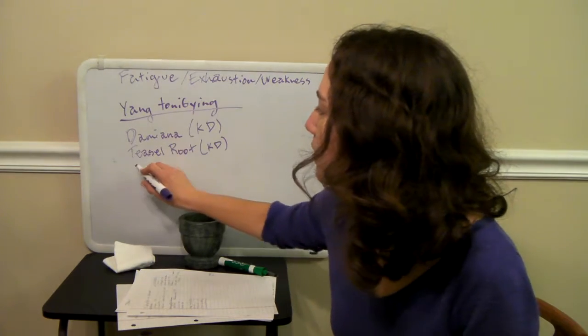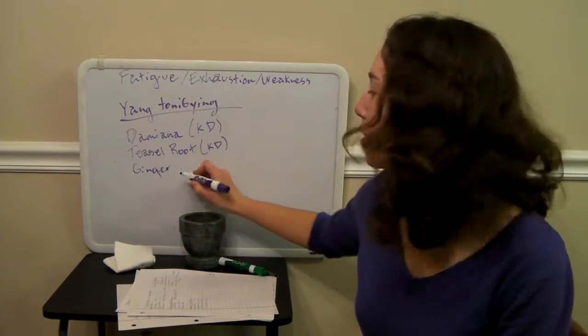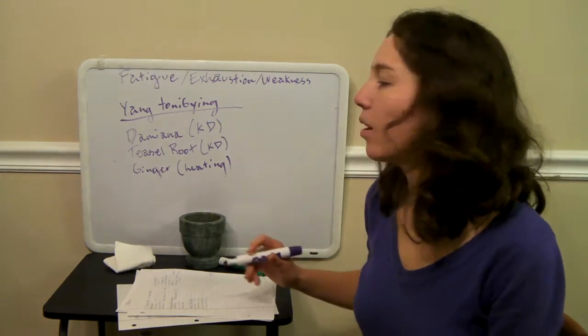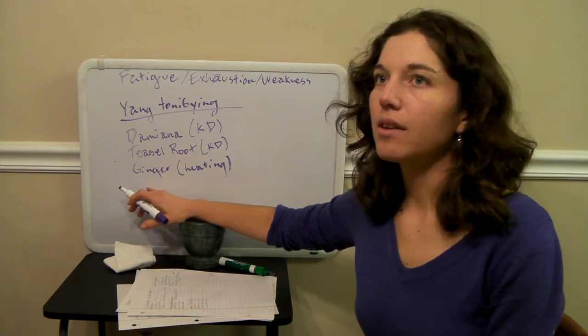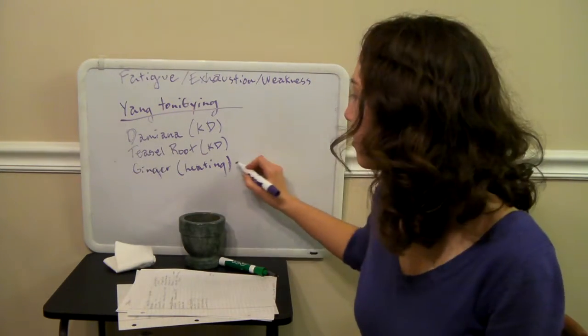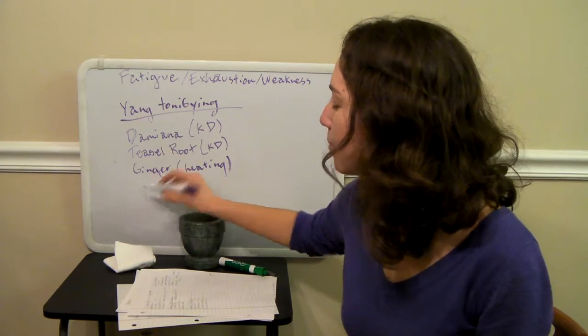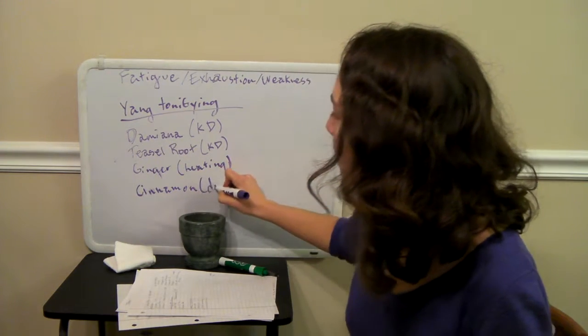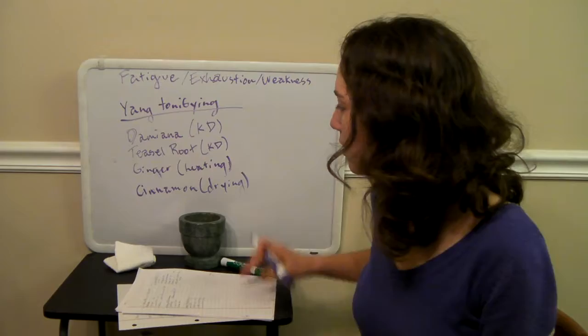And then you can also use some ginger for this. I would be kind of careful with the ginger because it's heating. So you don't want to overheat someone. So when you put this in here, make sure that you have enough moistening herbs to counteract it, and cooling herbs to counteract it. And you can also use cinnamon. But cinnamon is a little bit drying. So again, use the moistening herbs here to make sure you have that.